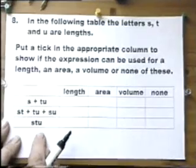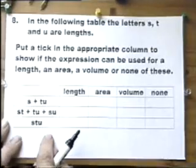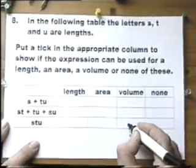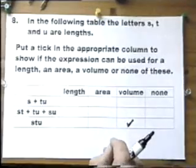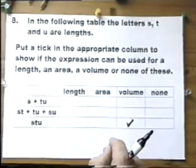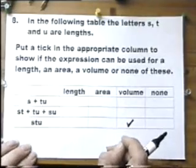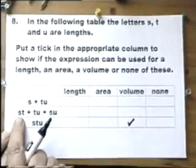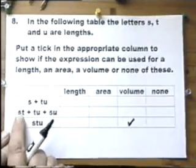Another way of looking at it is one dimension times one dimension times one dimension, which ends up as three dimensional, which is volume. Let's look at the one above it. s times t in itself is an area.